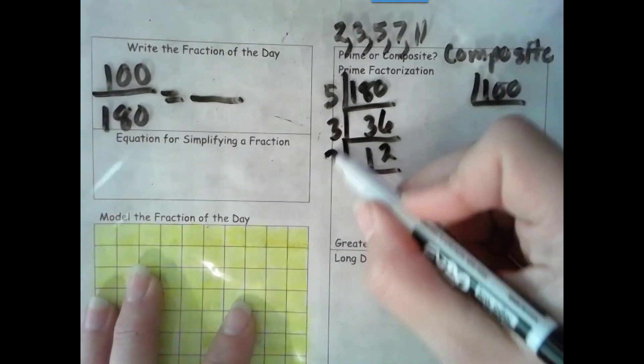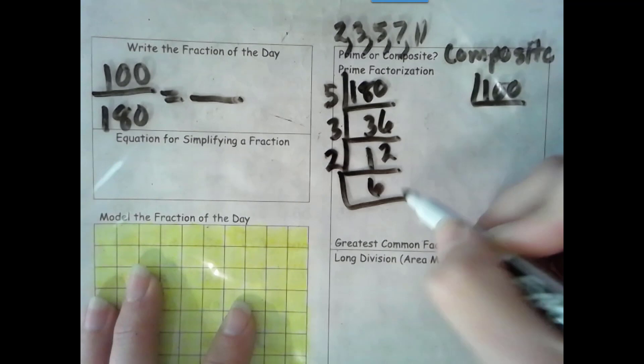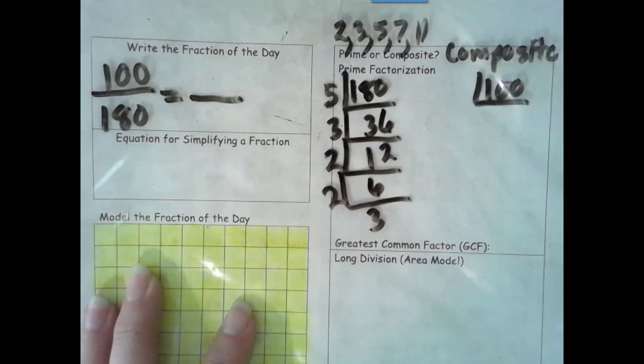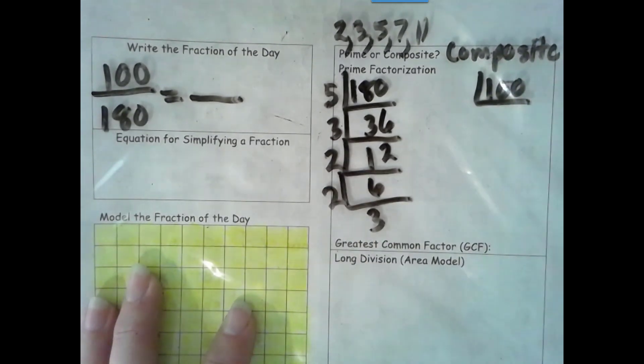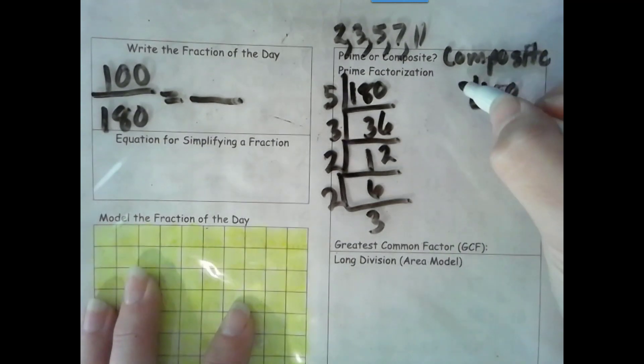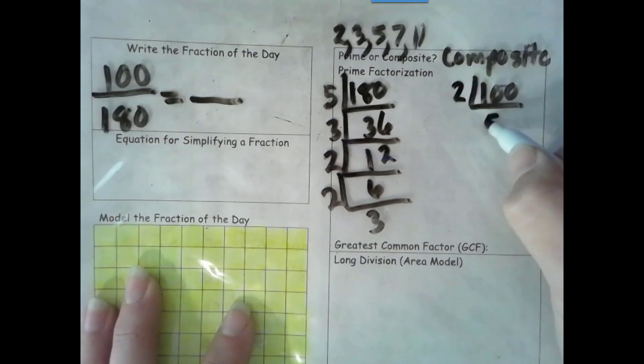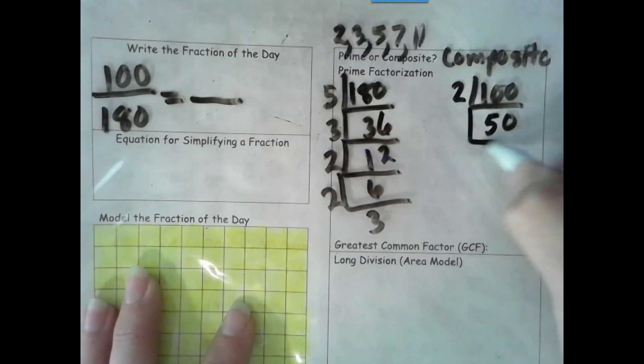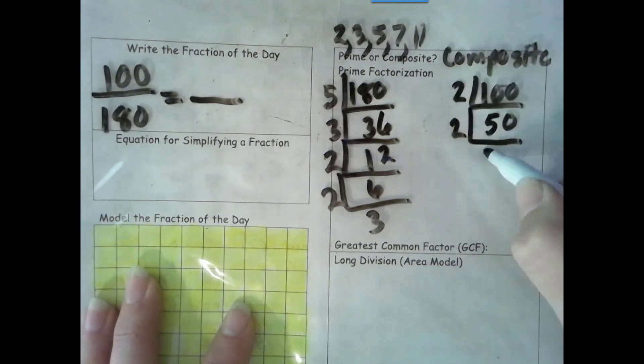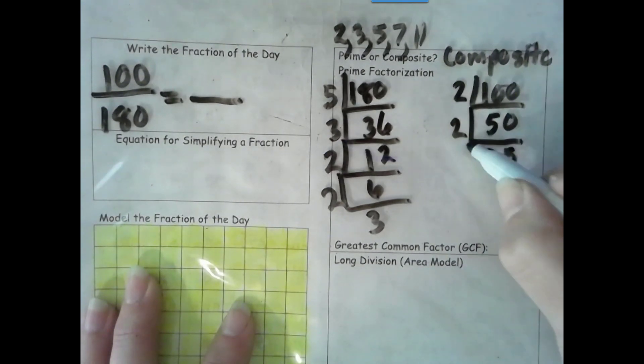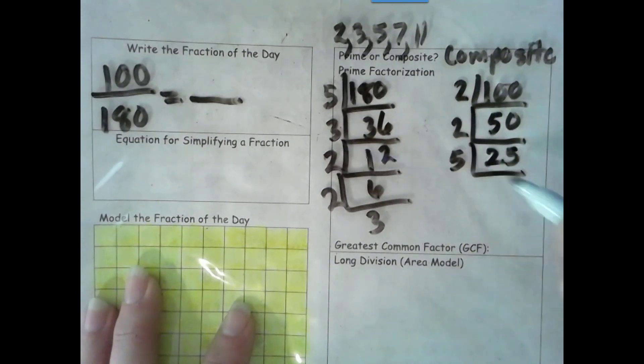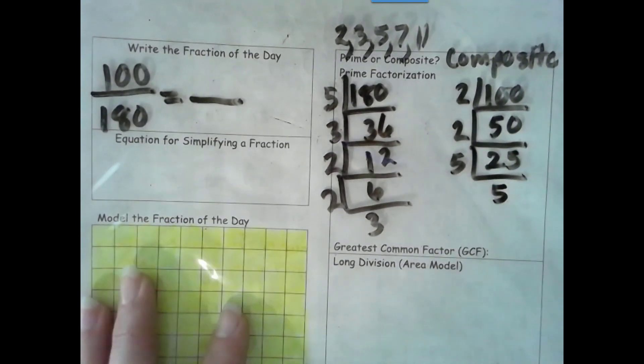It's even, so I can divide by 2. It's even, so I can divide by 2. Half of 100 is 50. I can divide by 2. Half of 50 is 25. Divide by 5, I get 5. 5 is prime, so I'm done.